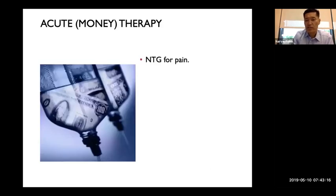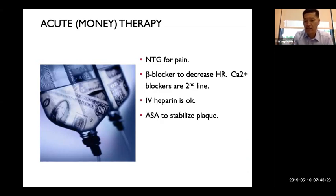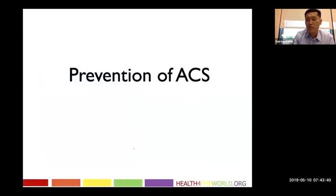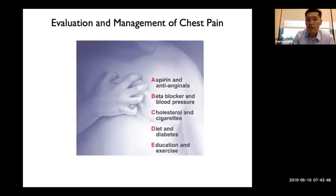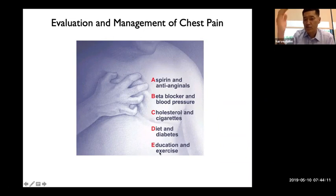To summarize acute medical therapy: nitroglycerin or morphine for pain, beta blockers to decrease heart rate, heparin if available, aspirin to stabilize the plaque, Plavix if available, and statins to lower cholesterol and stabilize plaques. For prevention after a heart attack: aspirin on discharge, beta blockers, cholesterol control by medications or diet, no cigarettes, diet and diabetes control, weight loss, blood pressure control, and exercise.